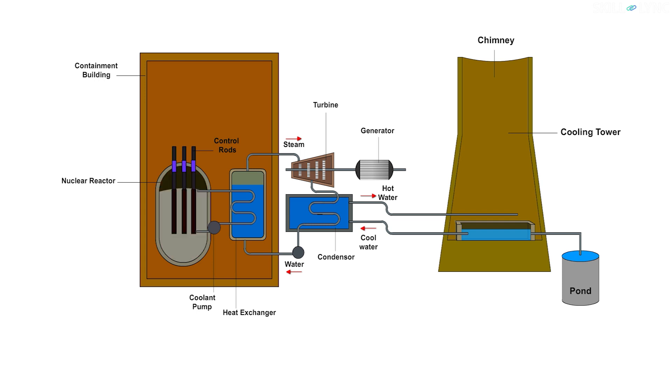First component is the nuclear reactor. It's a device that is used to facilitate nuclear fission of uranium-235. It is covered in a thick concrete shield to prevent the leakage of radiation.